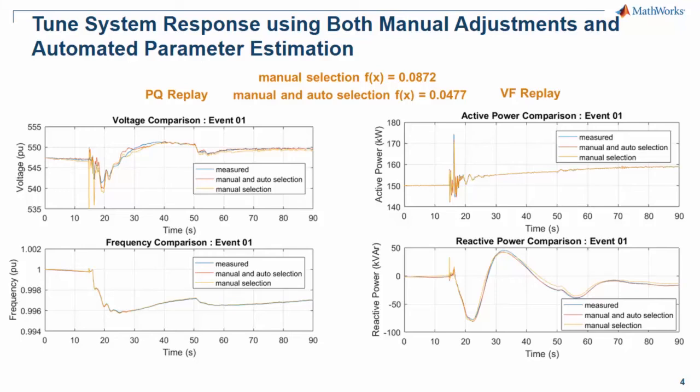Both absolute and relative constraints can be implemented. Absolute constraints are typically adequate for control system parameters, but relative constraints are required for generator parameters.